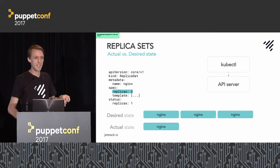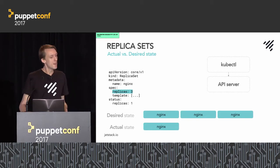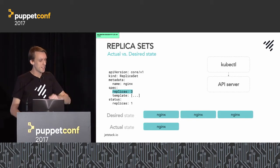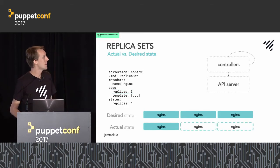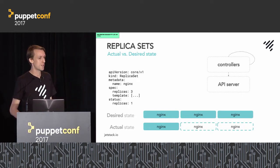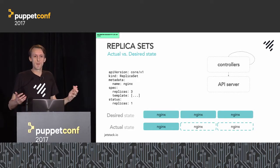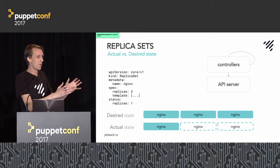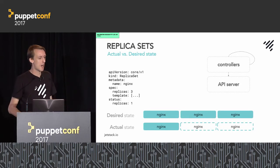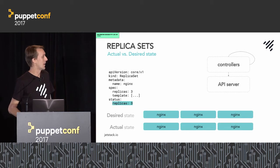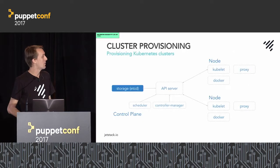If you later edit that resource and change it to three replicas, the actual state is still one, so the controller kicks in again — watching the resource status — and goes ahead and creates the two extra instances. So you declare the state you want, and you have smart controllers that go ahead and realize it for you. You requested three, you've now got three.